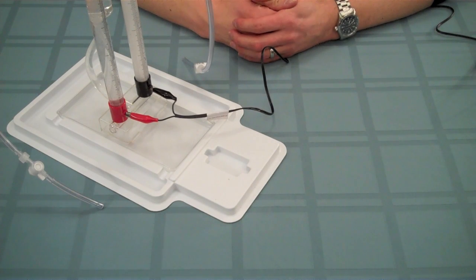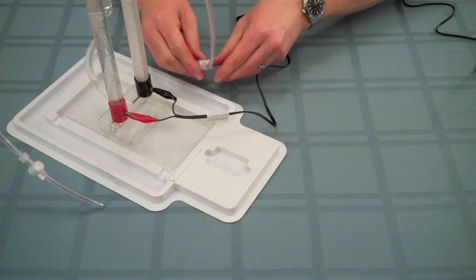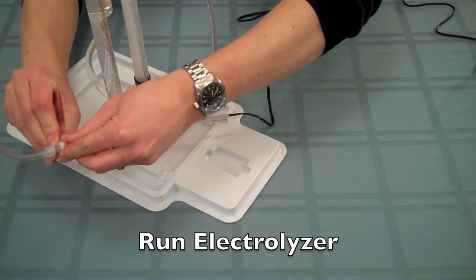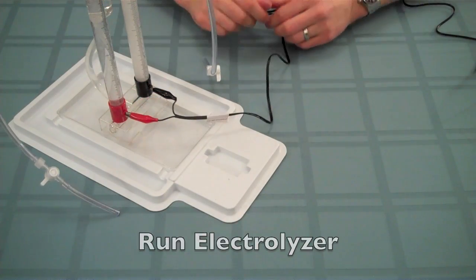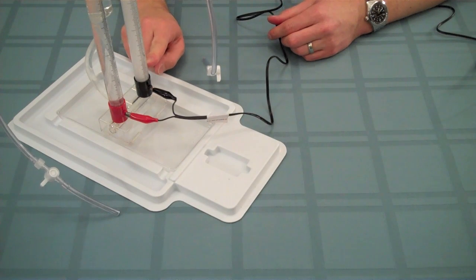After about one minute or so, go ahead and close both valves on the gas supply tubes and let the electrolyzer run until the hydrogen storage column is nearly full.